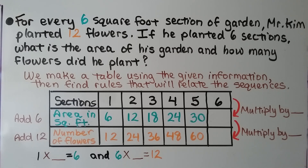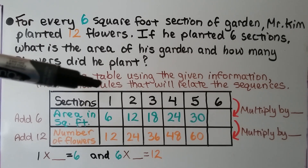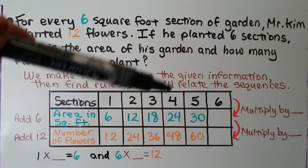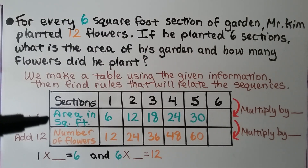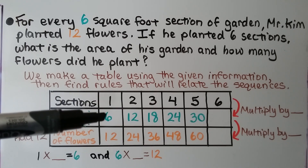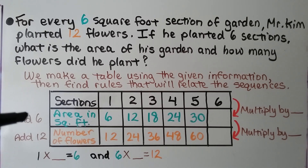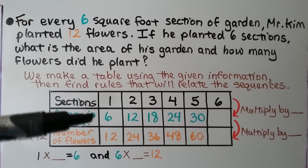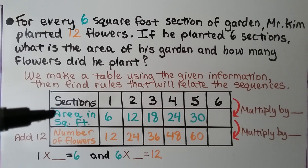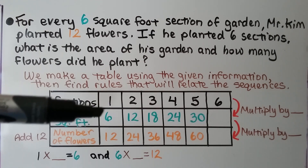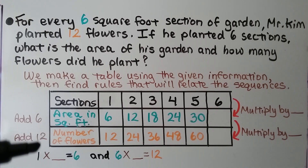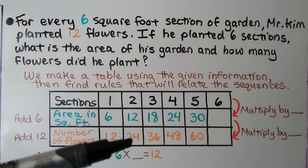We can make a table using the given information, then find rules that will relate the sequences. We have the sections: 1, 2, 3, 4, 5, 6 — we're looking for 6. The area in square feet for one section is 6 square feet, which has 12 flowers. We're going to add 6 for the area in square feet, so 2 sections gives 12 square feet. And since the number of flowers for one section is 12, we add 12 to get 24 flowers for two sections.